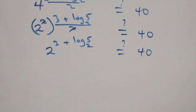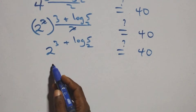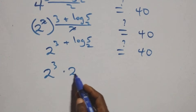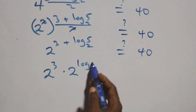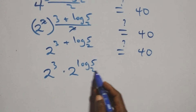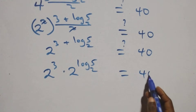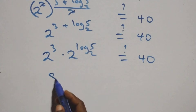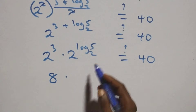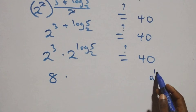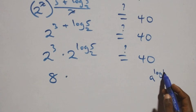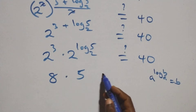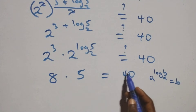Applying the product rule for exponents, we write 2 raised to power 3 times 2 raised to power log₂5, which equals 40. Now 2 cubed equals 8, and using the identity a raised to power log_a(b) equals b, we get 2 raised to power log₂5 equals 5. So 8 times 5 equals 40.